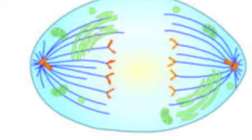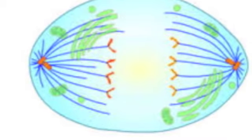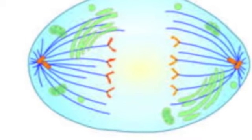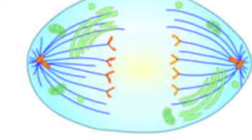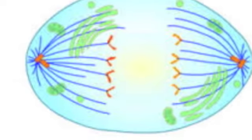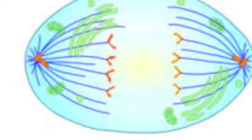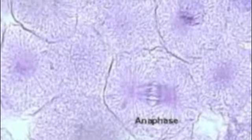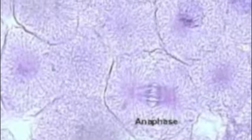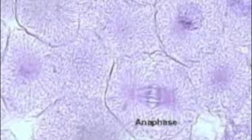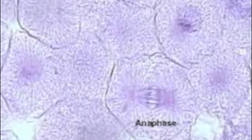In anaphase, the centromeres divide and the sister chromatids of each chromosome are pulled apart and moved to opposite ends of the cell, pulled by spindle fibers attached to the kinetochore regions. The separated sister chromatids are now referred to as daughter chromosomes.